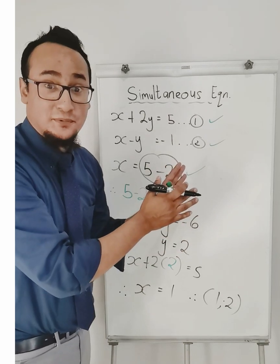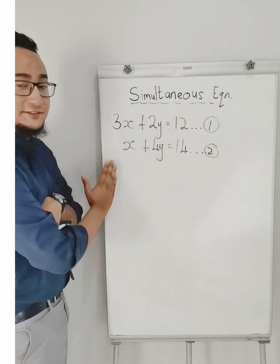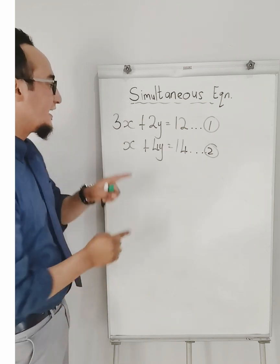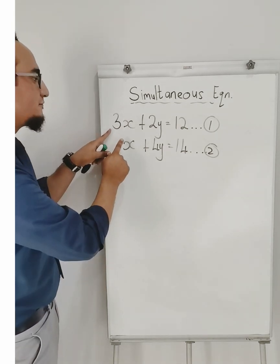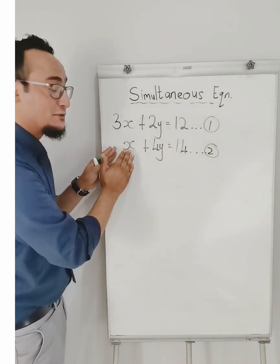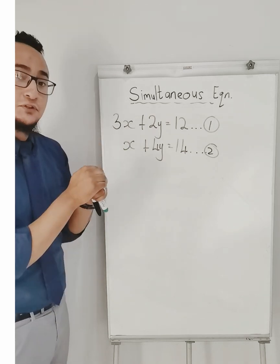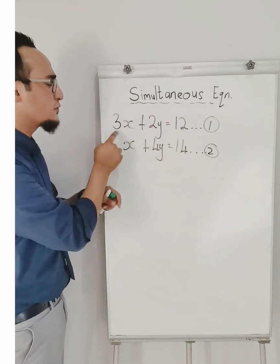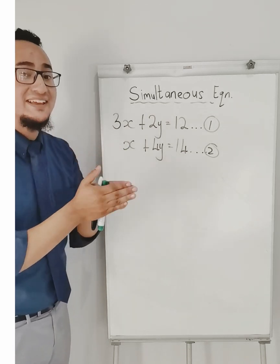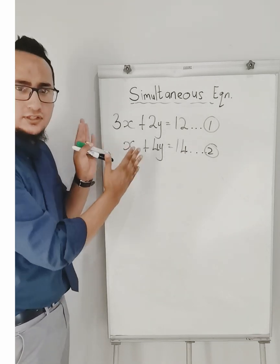On to example number 2. I have again two equations over here. I'm going to use the second one and solve for x. The reason I'm not going to use the first one is because I always want the coefficient of x to be 1. If I use 3, I'm going to run myself into fractions.